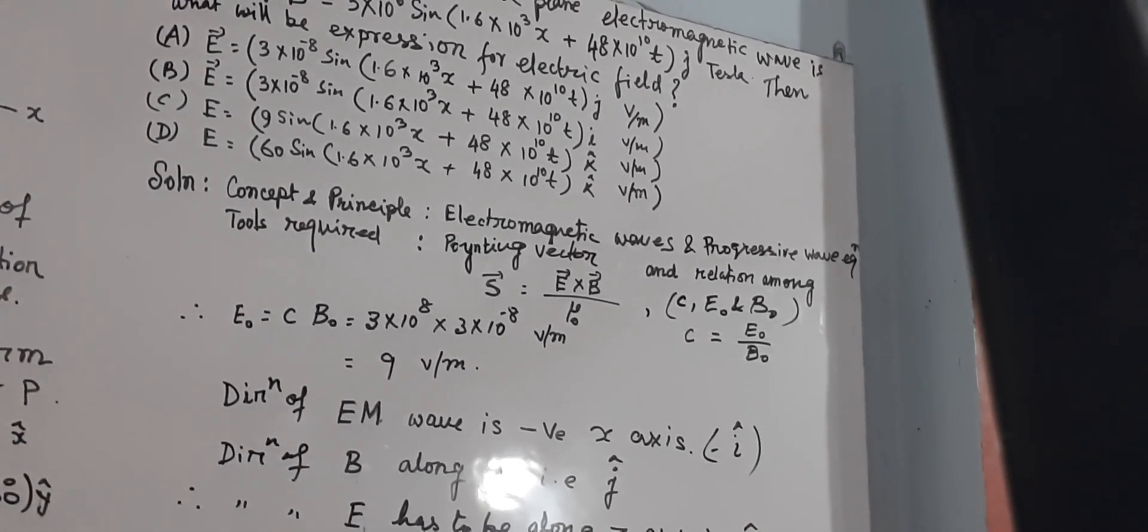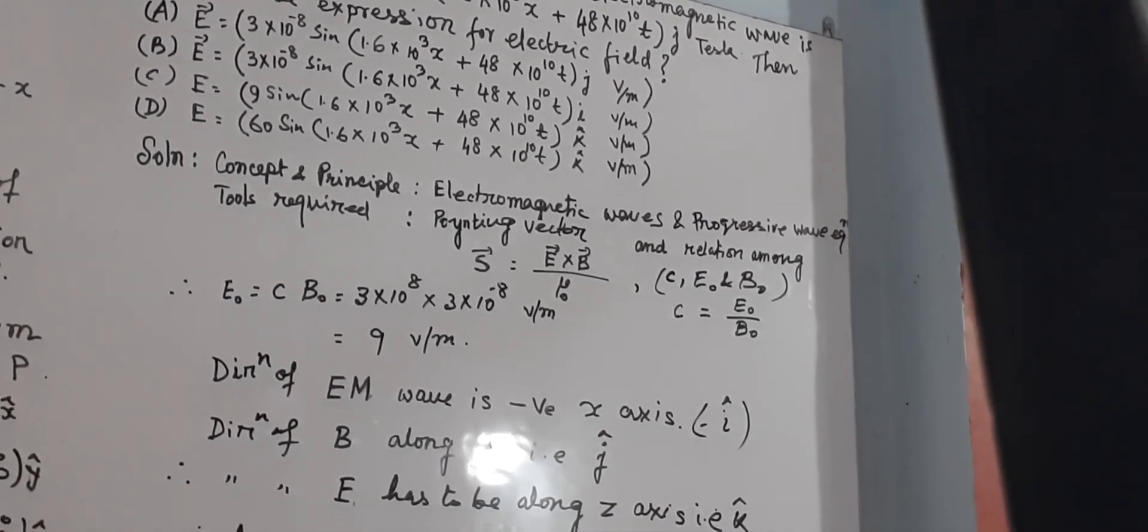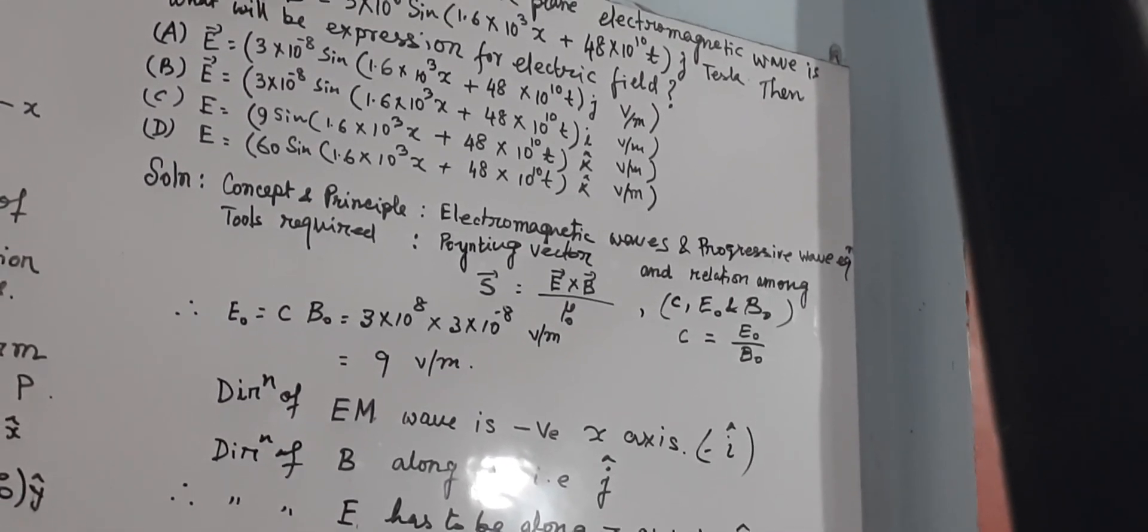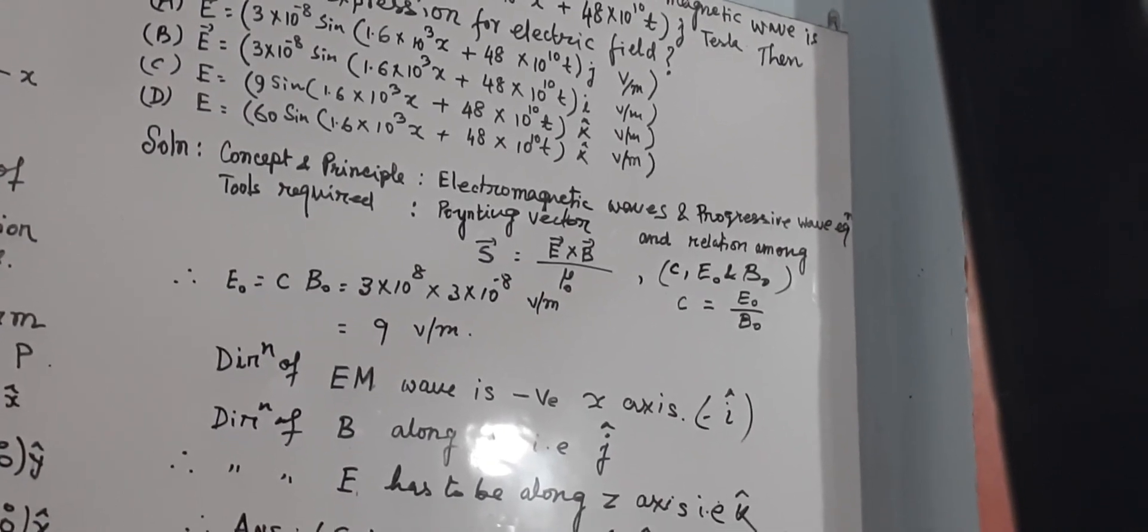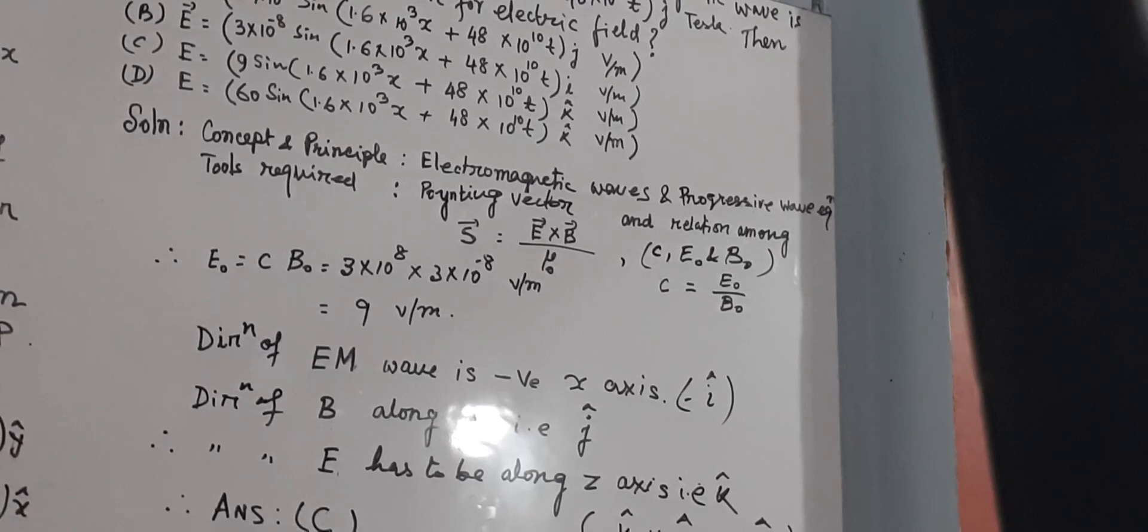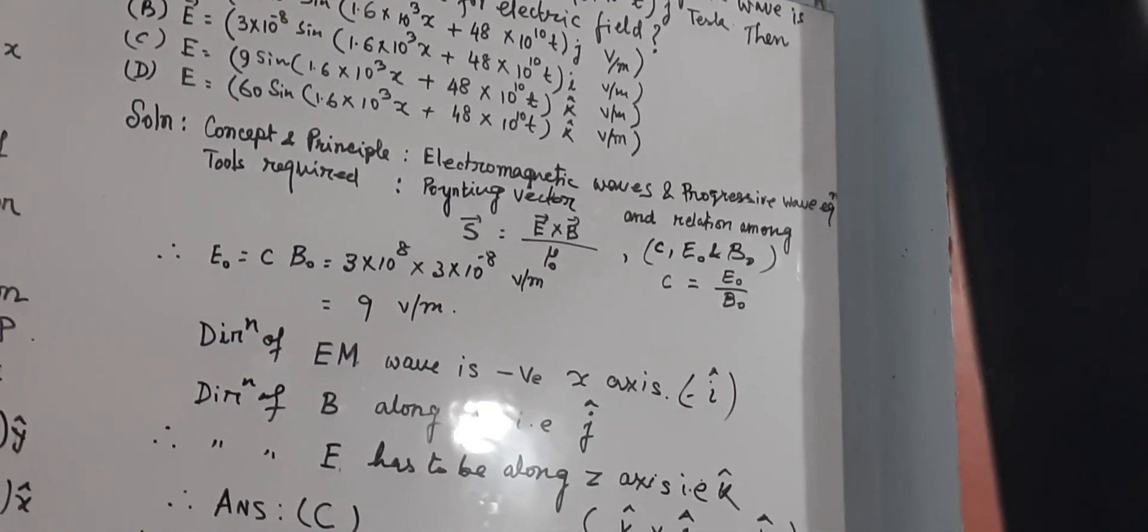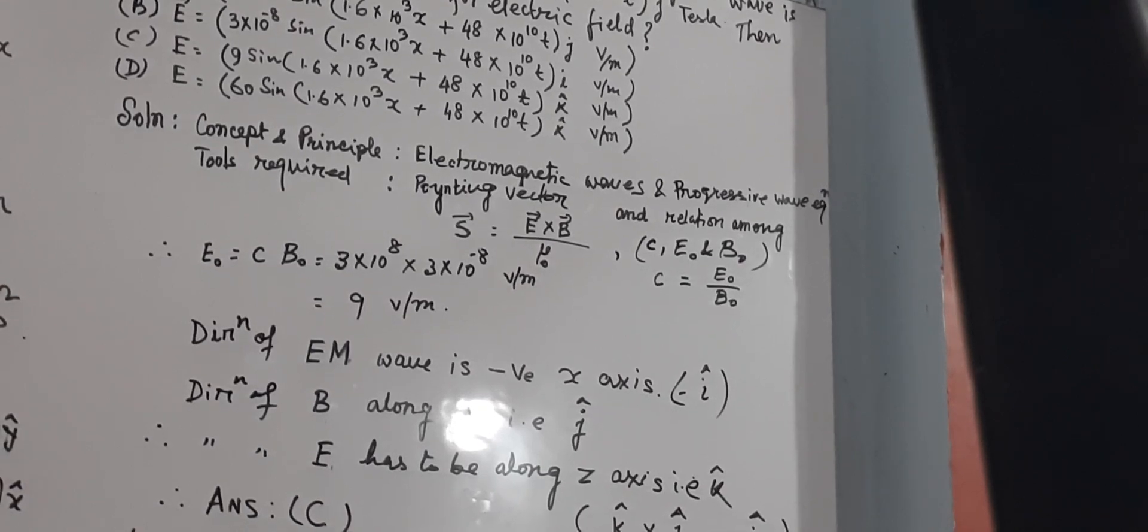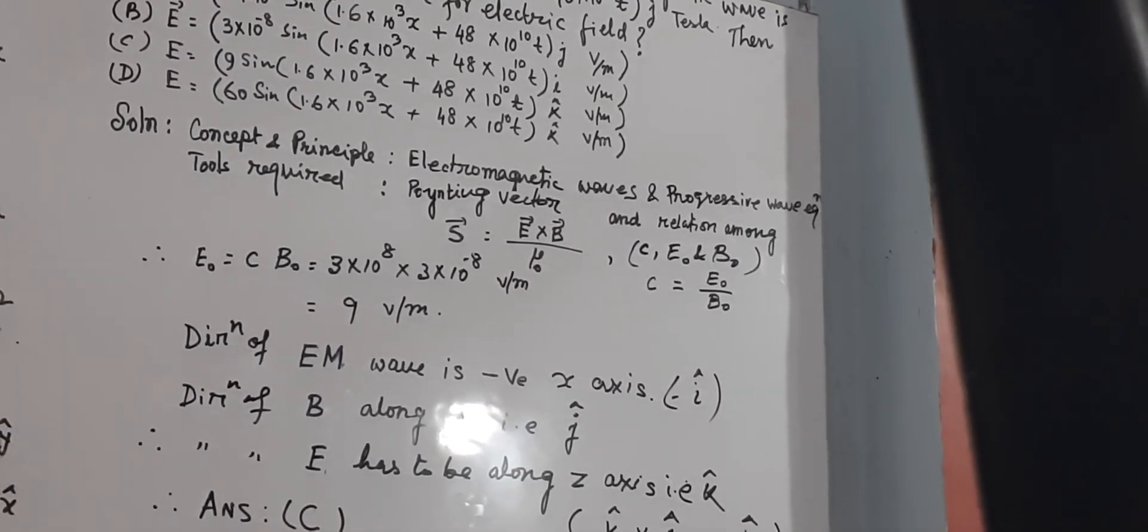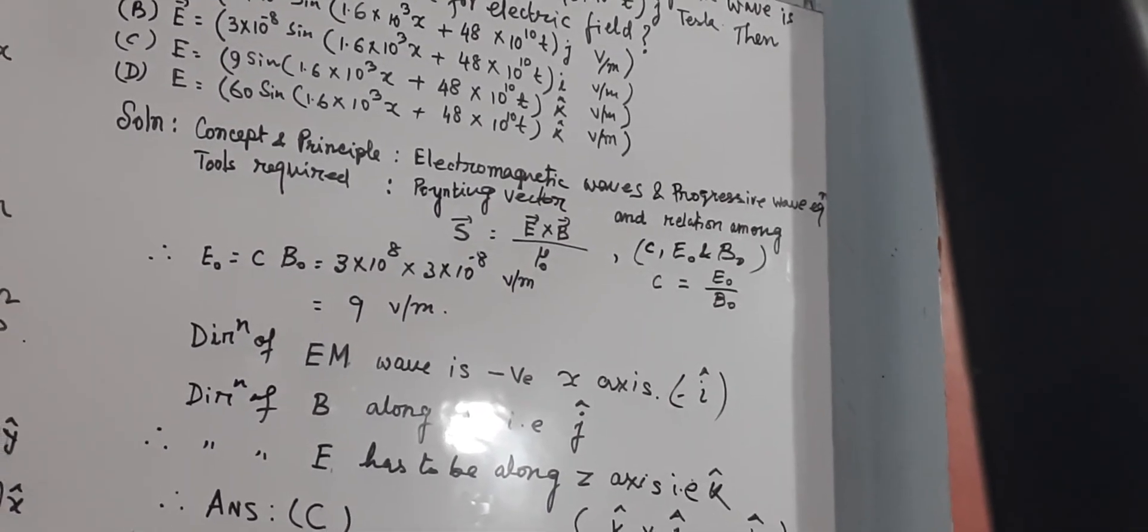In solution, you can see that concept and principle involved here is electromagnetic waves, and also knowledge of progressive waves. Tools require the Poynting vector, and also the relation among C, electric field in vacuum, and electromagnetic field in vacuum.